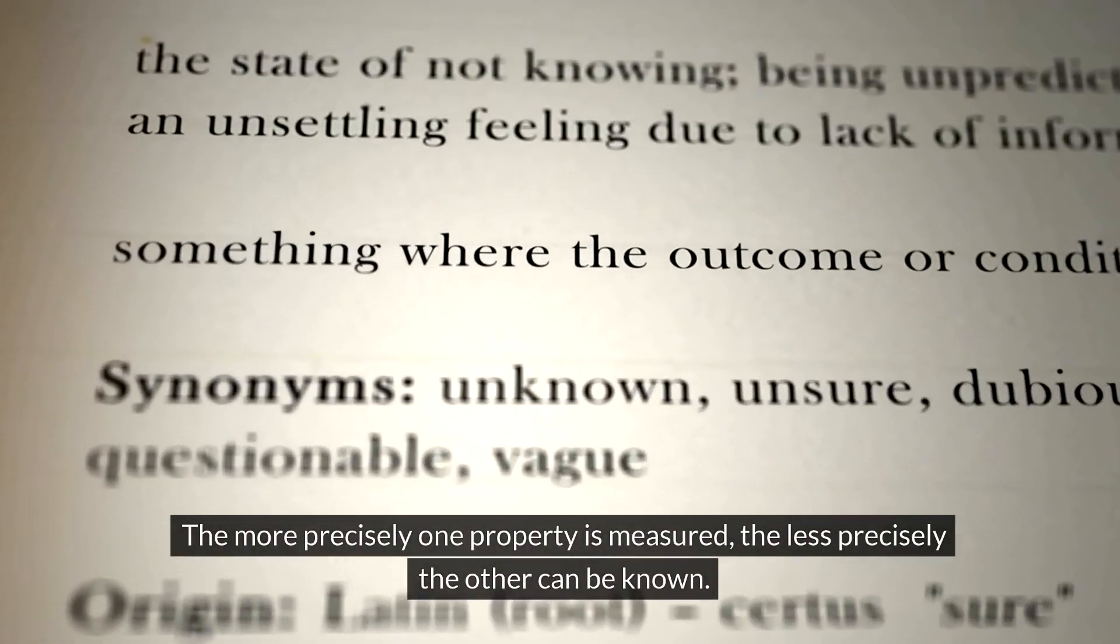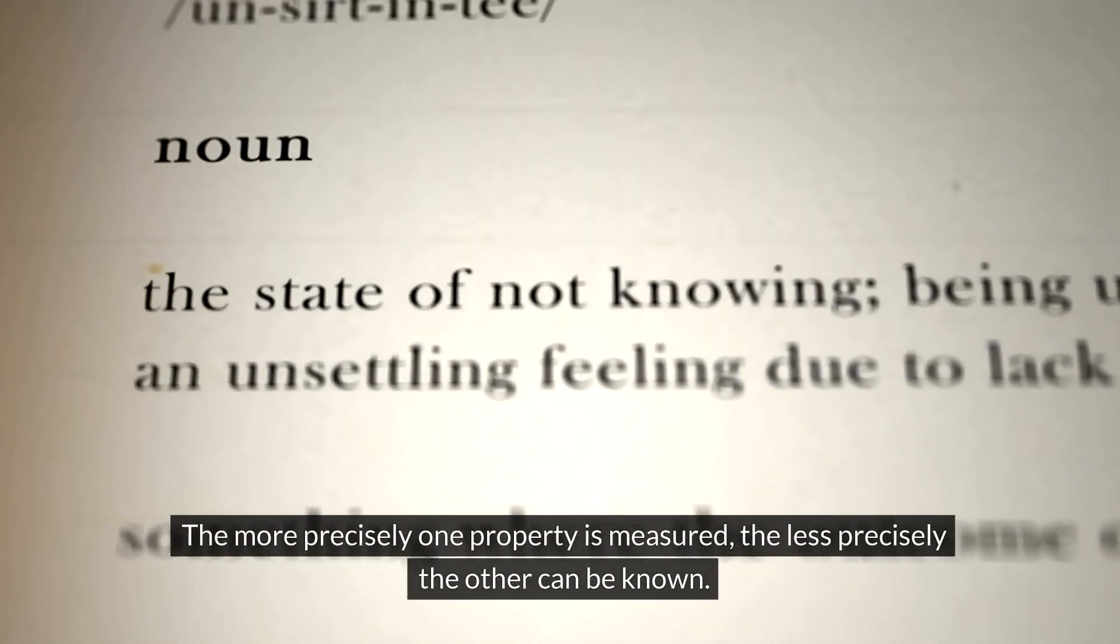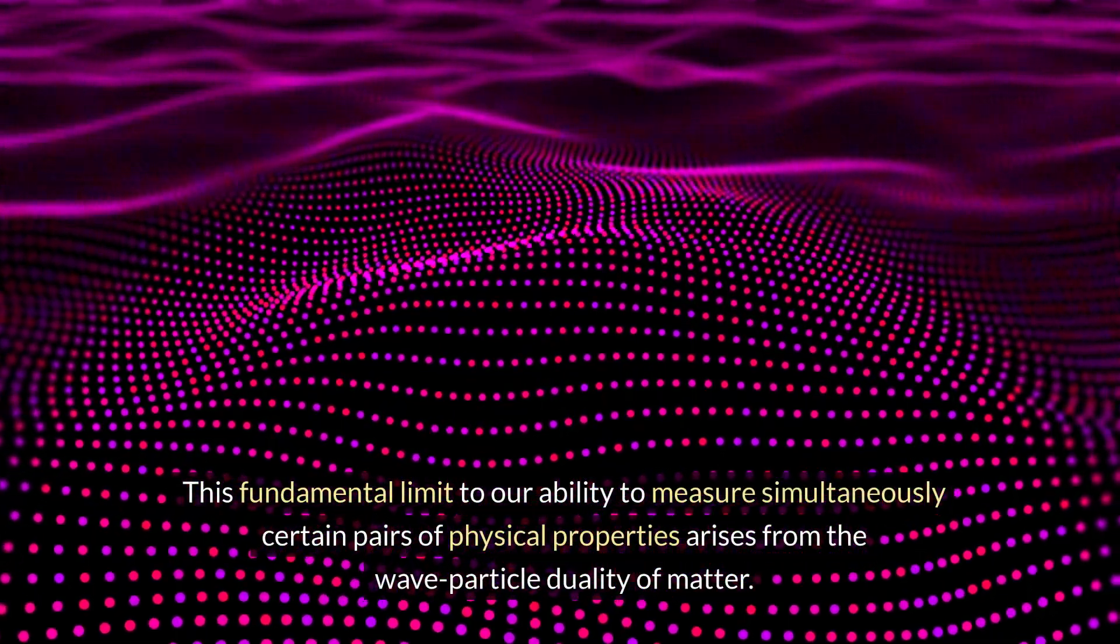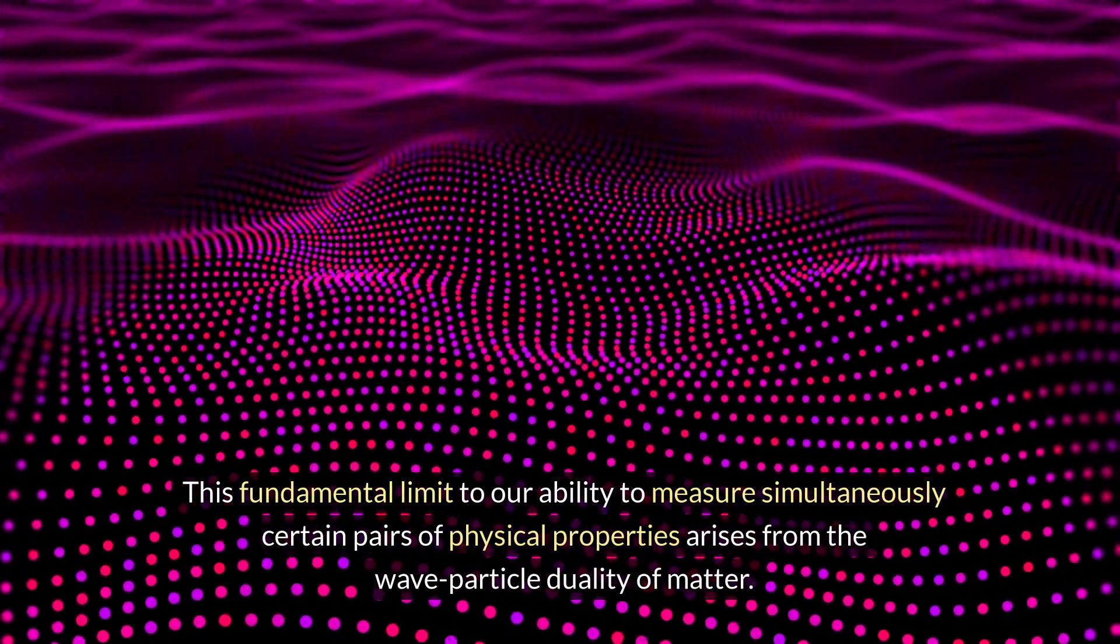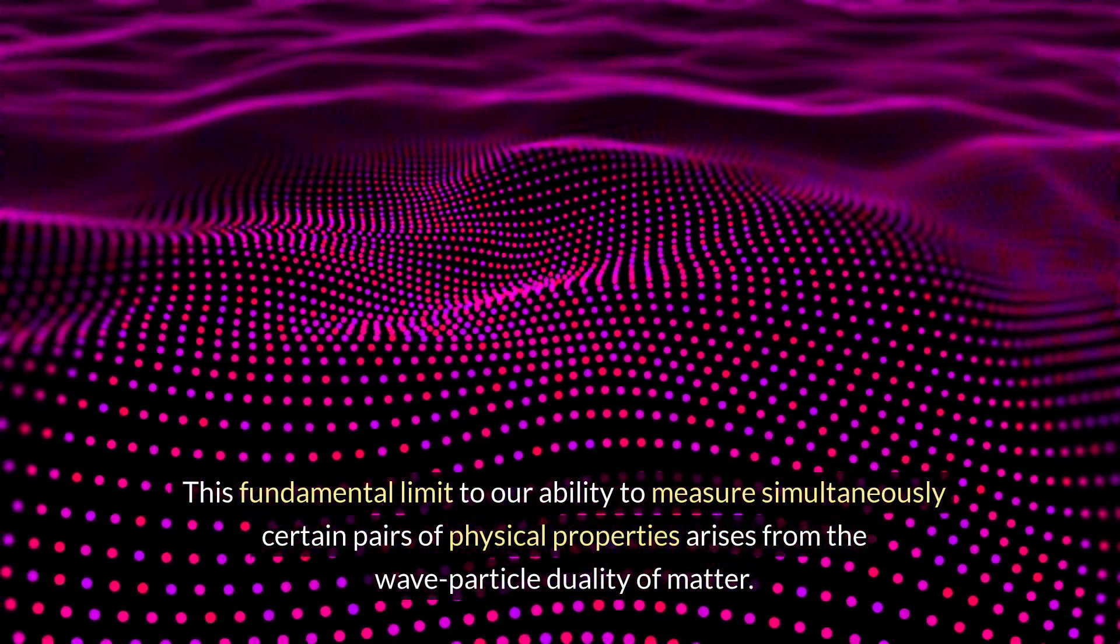The more precisely one property is measured, the less precisely the other can be known. This fundamental limit to our ability to measure simultaneously certain pairs of physical properties arises from the wave-particle duality of matter.